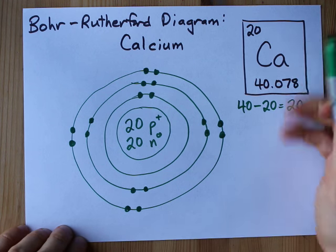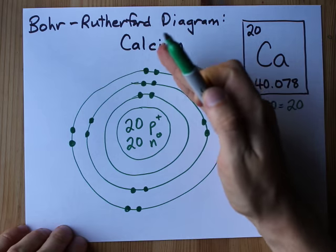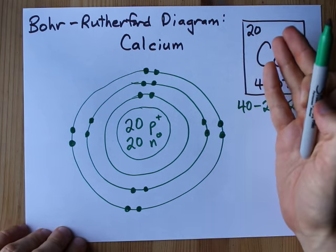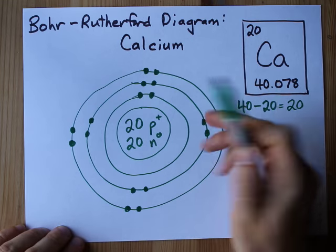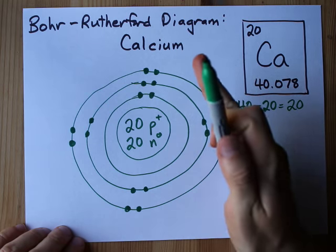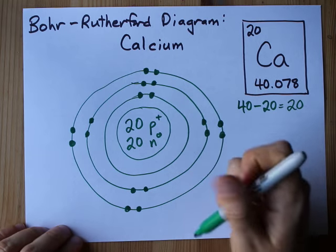For calcium and earlier, you have to stop at 8 in the third shell. Once you get to element 21 and above, those rules go out the window. But for now, because we're 20 or less, we're totally fine, 8 in the third shell, that's 18.